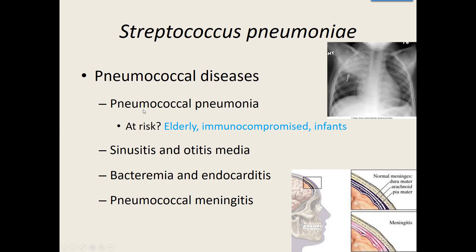Those at highest risk — the usual group — are the elderly, immunocompromised, and infants, who will suffer the worst side effects. But although the word pneumonia is in its name, it's not the only thing it can cause. Depending on where the bacteria gets, it can cause sinus infections, ear infections, bloodstream infections, and heart inflammation. If it gets into the cerebrospinal fluid, it can cause pneumococcal meningitis.